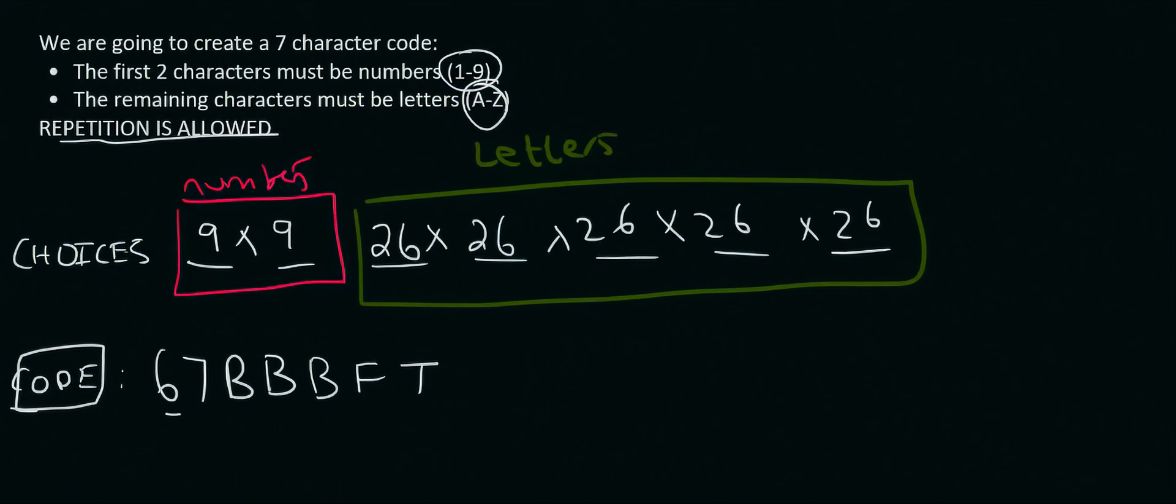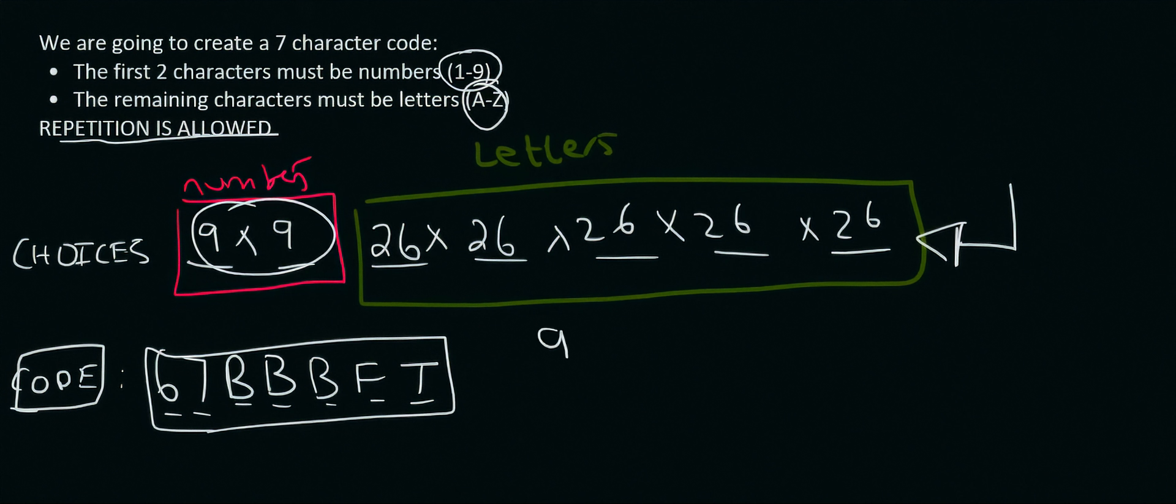So there's your code. 1, 2, 3, 4, 5, 6, 7. How many of those could you have made? Well that's what this part over here tells us. So you put all of that on the calculator. A nice simple way would be to type in 9 squared times by 26 to the power of 5. Quite a big number. 96,239,456. That is how many different codes you could have made.